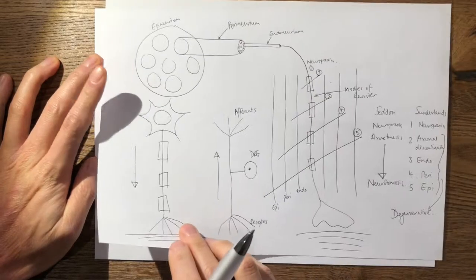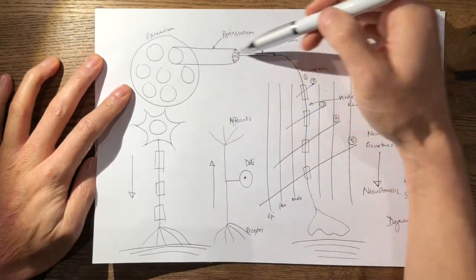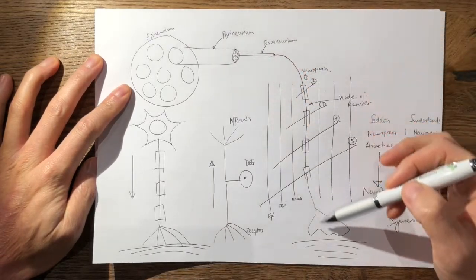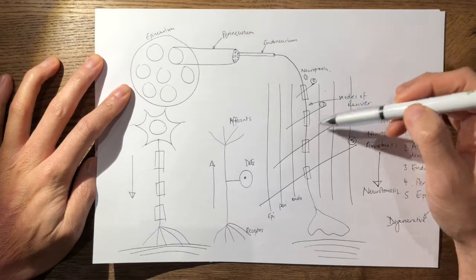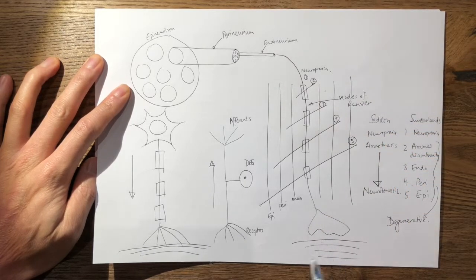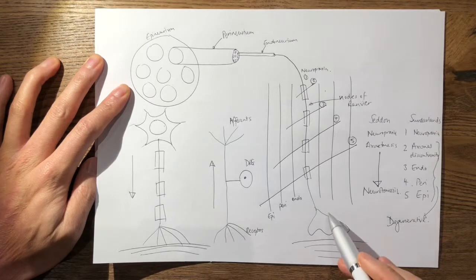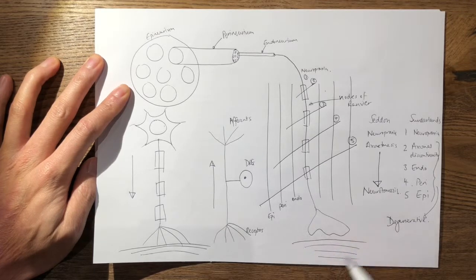If you remember, when the action potential happens it propagates down the motor neuron via saltatory conduction over the nodes of Ranvier and it ends here at the motor end bulb which then depolarizes your sarcolemma. So in this video I'm just going to explain what happens here.